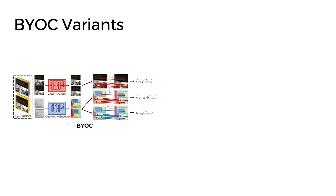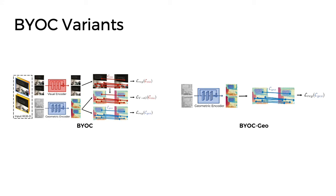We consider two variants of our approach. The first is our full model, which uses both the registration and visual-to-geometric transfer losses using RGBD video. The second variant only uses the geometric registration loss, and as a result does not require RGB data at any point during training or inference.